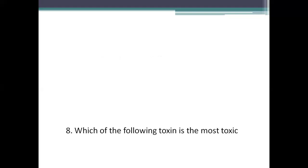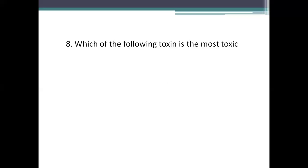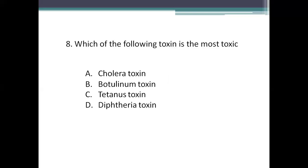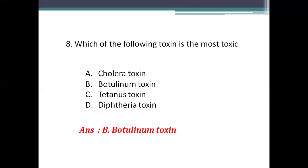Next question: which of the following toxins is most toxic? Option A: cholera toxin. Option B: botulinum toxin. Option C: tetanus toxin. Option D: diphtheria toxin. The right answer is Option B, botulinum toxin. Botulinum toxin is the most powerful toxin on earth — it is a neurotoxin.